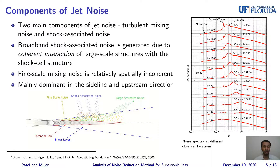At downstream directions, the spectrum is entirely composed of large-scale mixing noise, while in the sideline and upstream directions, the broadband shock-associated noise and fine-scale mixing noise dominate. In this work, we are going to mainly focus on the broad hump of shock-associated noise and the low-frequency fine-scale noise, and we are not going to focus on the large-structure noise.